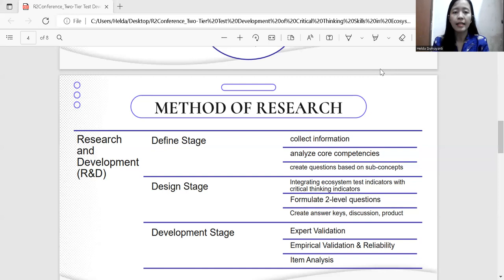Design step. This step is the planning of our designing step to determine the ecosystem sub-concept, measurement, evaluation, indicators, and critical thinking. Formulation of level one question, formulation of level two question, answer keys, discussion, and reference sources used. In addition, it also makes product assessment sheets for expert validation to make it easier for the assessments.